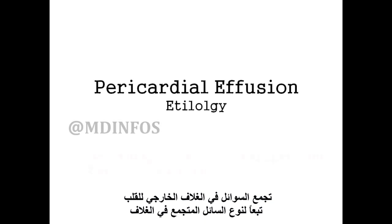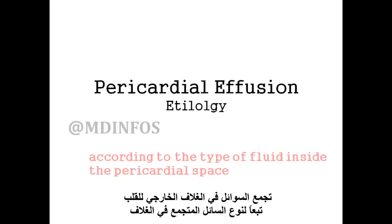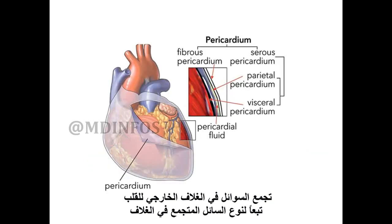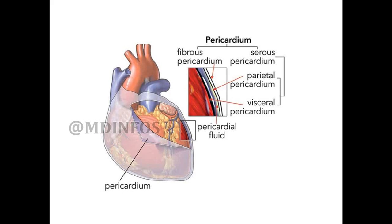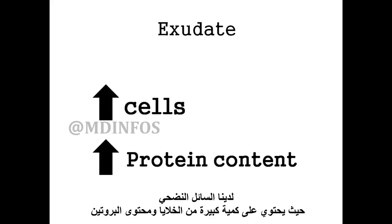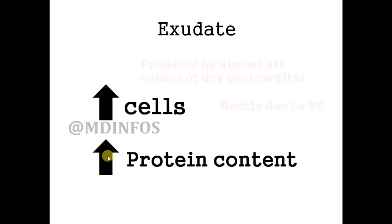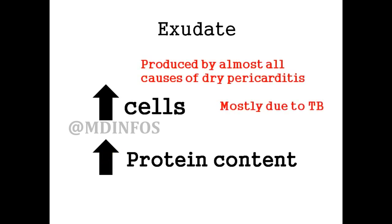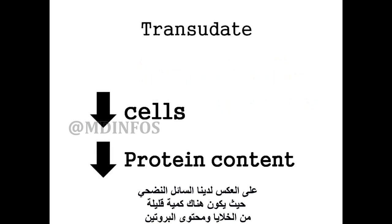Pericardial effusion etiology is classified according to the type of fluid inside the pericardial space. We have the exudative pericardial effusion, in which we have a high amount of cells and high protein content in the fluid. This is almost produced by all causes of dry pericarditis, mostly due to tuberculosis.